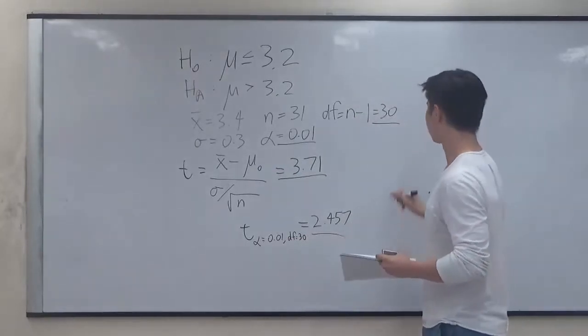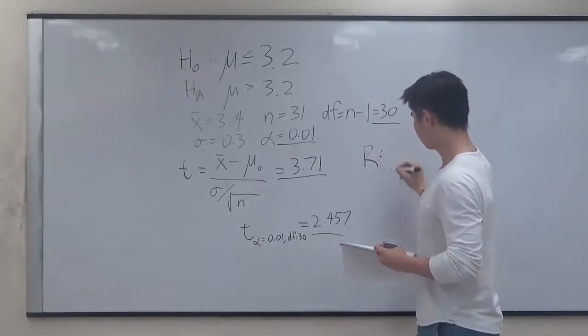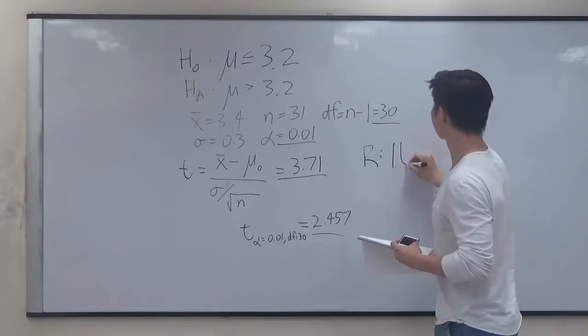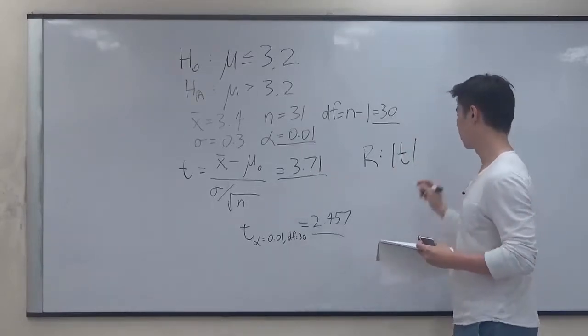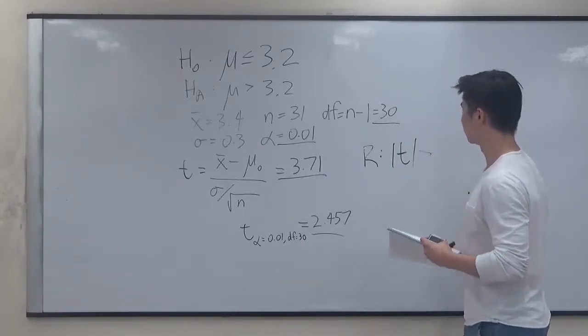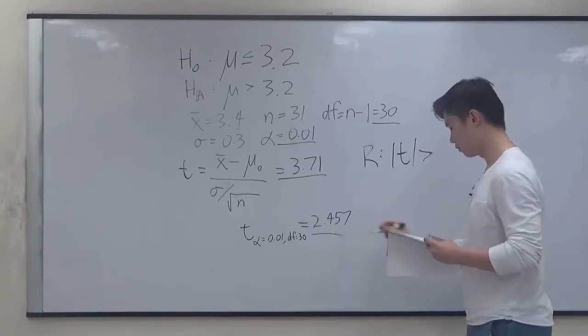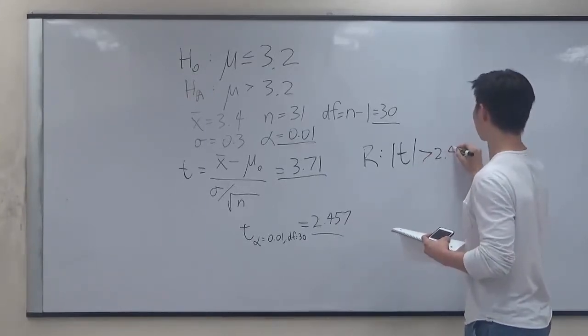So we do that by just saying rejection if our sample t-value that we calculated here is greater than the t-value that we found on the table, which is 2.457.